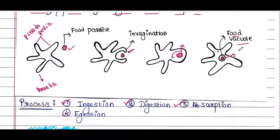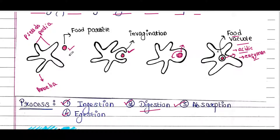In the food vacuole, acidic contents are present, so the food particle will be degraded in that acidic medium. The vacuole also contains many enzymes that act upon the food particle and fully digest it. So the food particle gets digested by the action of both the acidic medium and the enzymes in the food vacuole. This process is called digestion.